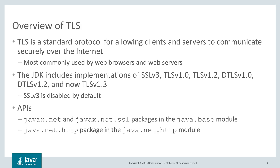Note that SSL v3 is widely considered insecure and unsafe to use, and is disabled by default in the JDK. When using TLS in your Java applications, you can use the javax.net and javax.net.ssl packages in the java.base module. These are lower-level APIs for using SSL and TLS, and are often referred to as JSSE, or the Java Secure Socket Extension.